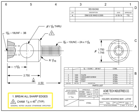The notes list conveys information that the call-outs within the field of the drawing do not. It may include general notes, flag notes, or a mixture of both. Traditional locations for the notes list are anywhere along the edges of the field of the drawing, but most are typically found in the upper left or bottom left corners.